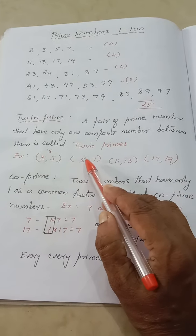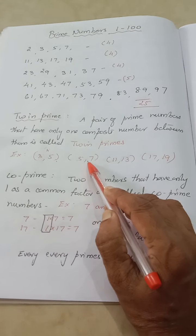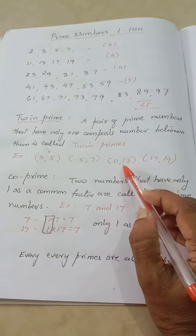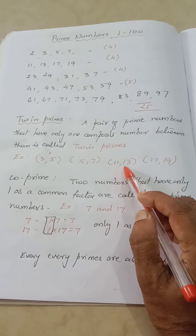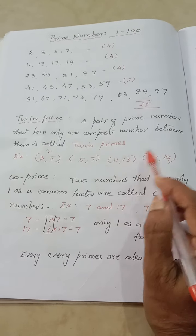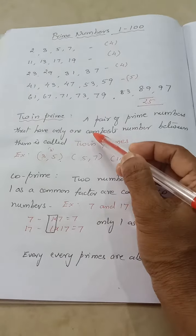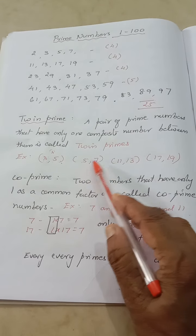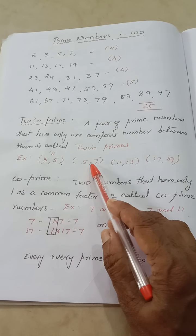Another example: 5 and 7. Then 11 and 13 — in between I get only 12 as a composite number. So such numbers are called twin primes. In between two prime numbers, if we get only one composite number in between, they are twin primes.